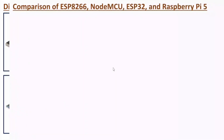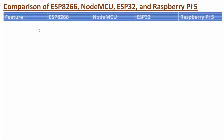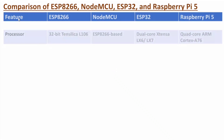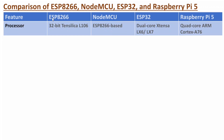Now let me compare all these boards based on different features. If you talk about the processor, ESP8266 and NodeMCU have a 32-bit Tensilica L106 processor. With ESP32, we have a dual-core Xtensa LX6 or LX7 — the LX7 has higher computational capabilities. With Raspberry Pi 5, we have a quad-core ARM Cortex-A76.